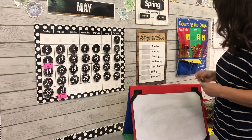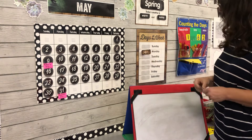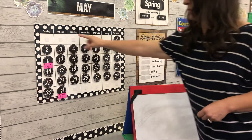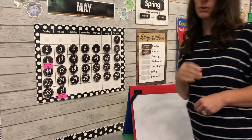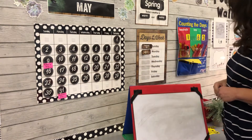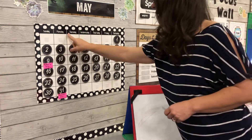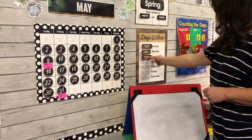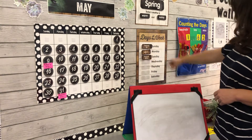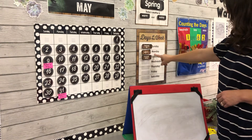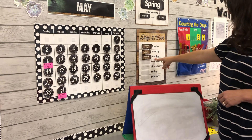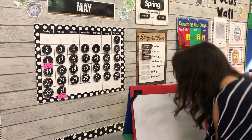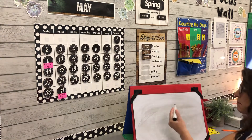Yesterday was Sunday — a special Sunday because it was Mother's Day. Tomorrow will be Tuesday. So: yesterday was Sunday, today is Monday, and tomorrow will be Tuesday. I'm going to write that on the board.